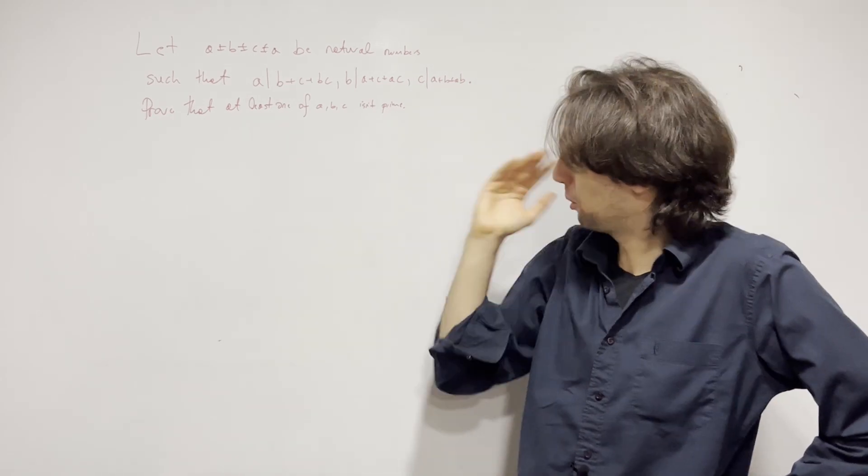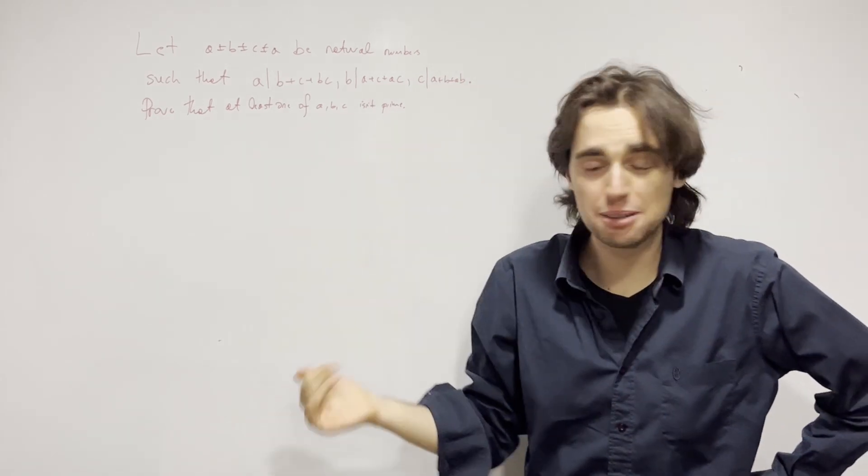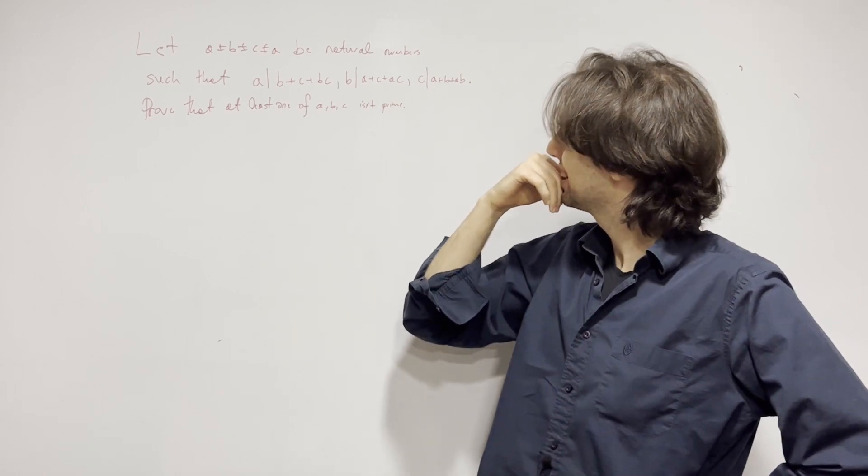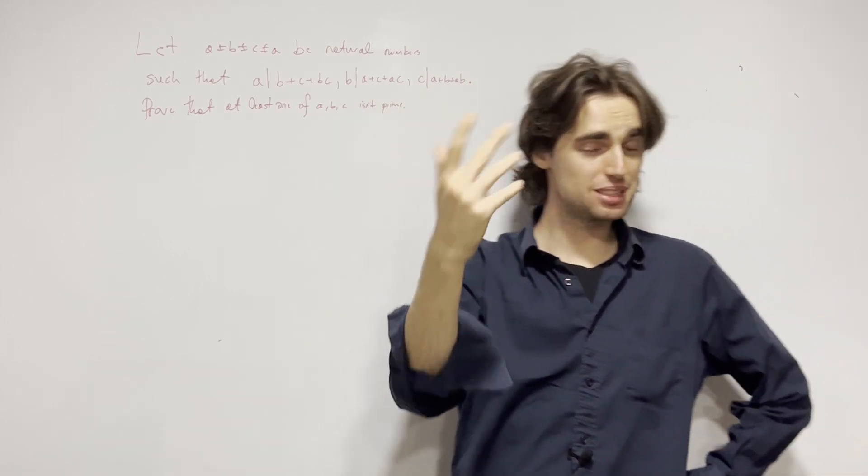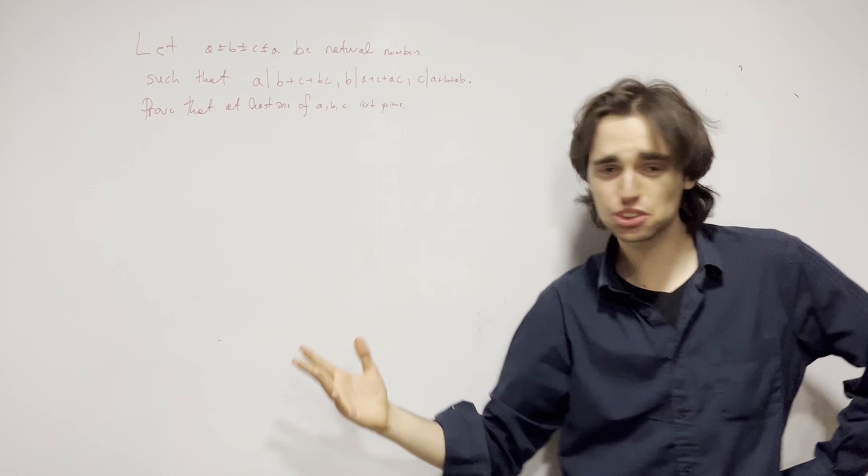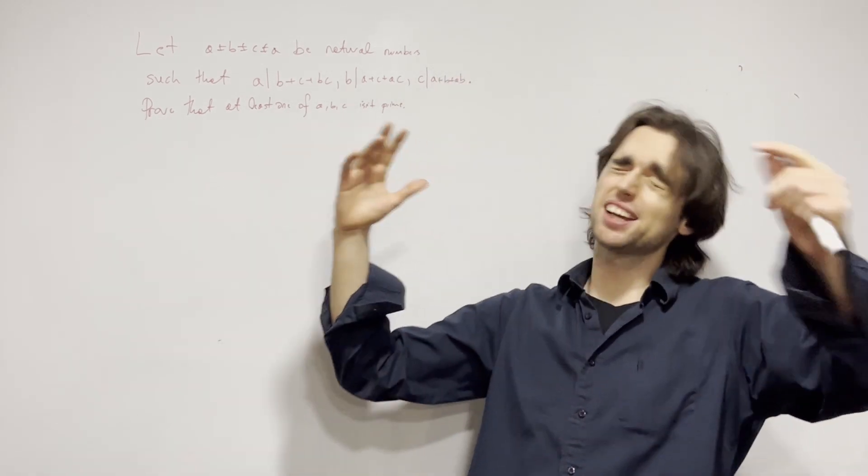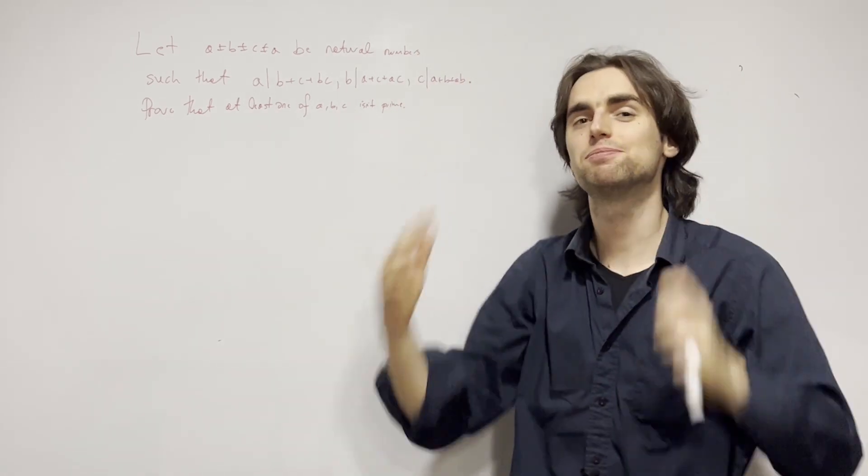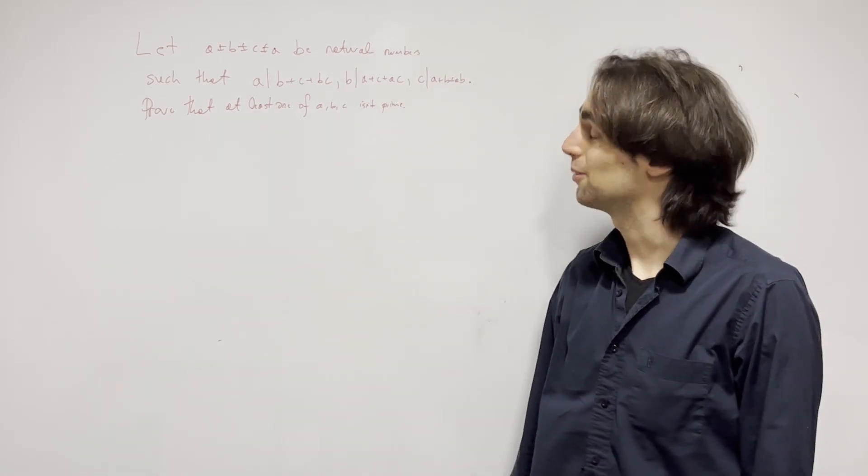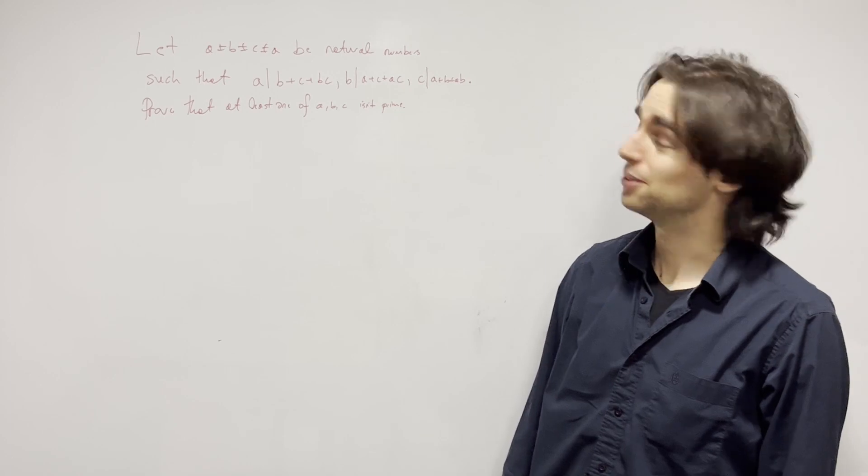How am I supposed to show one of them is not prime? I don't know if this was A plus 1 times C plus 1, maybe, but like this, what do I do? This is why I love the problem, because you're like, oh my god, what do I do here?